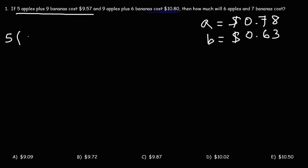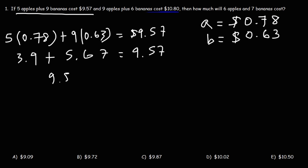So 5 times 78 cents plus 9 times 63 cents, is that equal to $9.57? So 5 times 0.78, that's 3.9. And 9 times 0.63 is 5.67. So adding 3.9 and 5.67 gives us 9.57. So those two values satisfy the first equation.